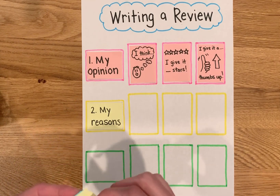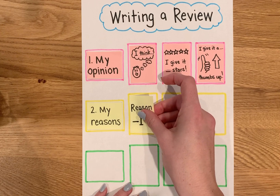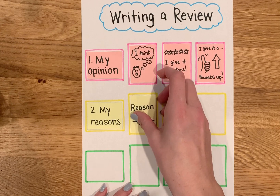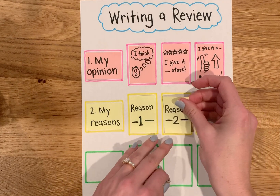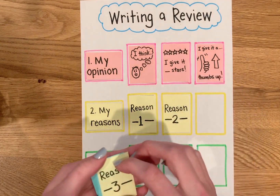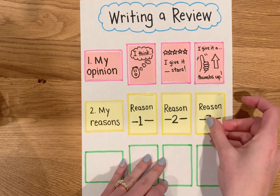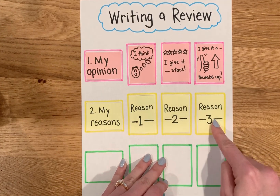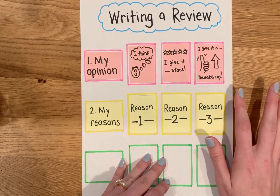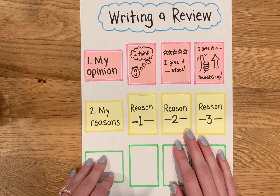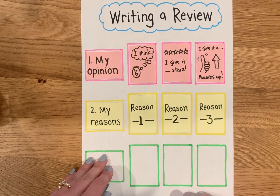For example: "I really like the book Pete the Cat because reason one... because reason two... because reason three." Three reasons will help you to have a really strong opinion, so that when your reader is reading about this, they can become convinced that you really know what you're talking about.